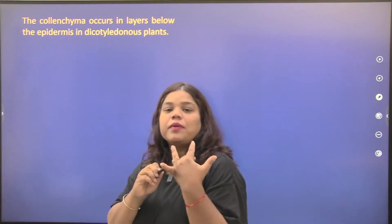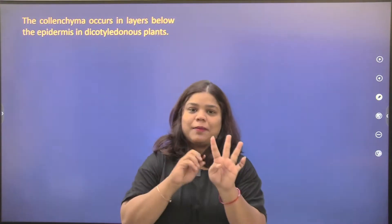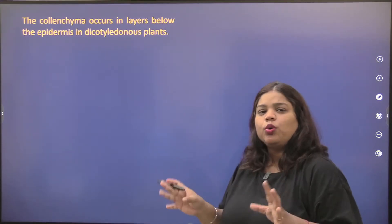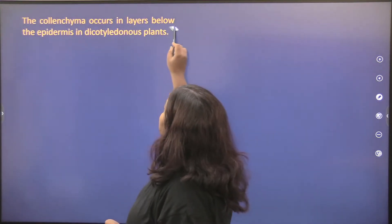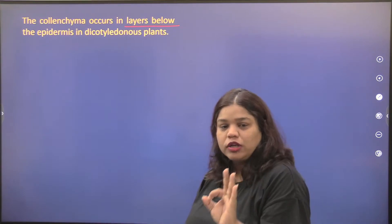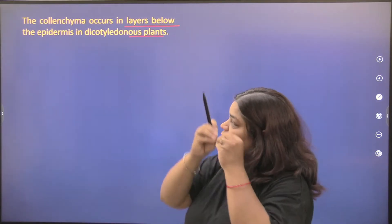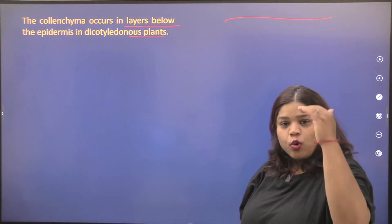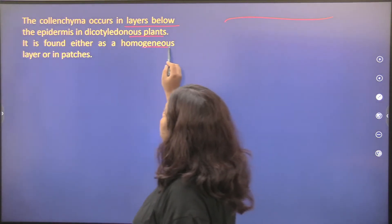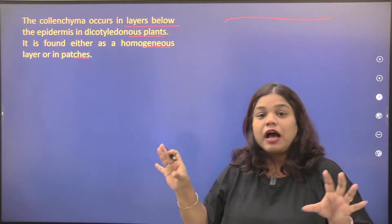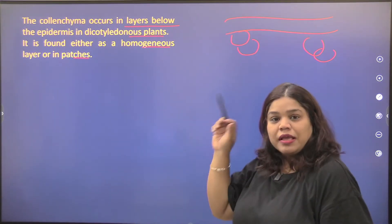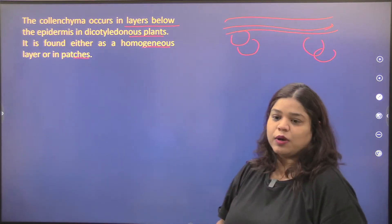Now, colenchyma. In simple tissues, there are three types: parenchyma, colenchyma, and sclerenchyma. Colenchyma occurs in layers below the epidermis in dicotyledonous plants — just under the top epidermis layer. It is found either as a homogeneous layer or in patches.